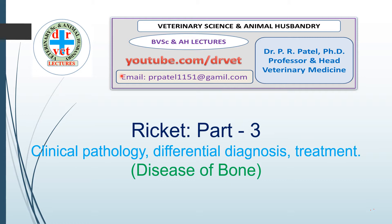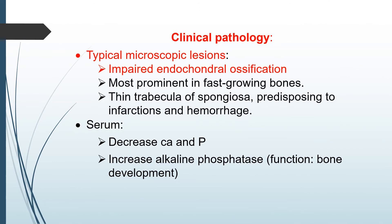Rickets disease affects the young, especially the long bones. In Clinical Pathology, there are typical microscopic lesions, including impaired endochondral ossification. The ossification of the cartilages is very poor and is most prominent in fast-growing bones. The trabeculae of the spongiosa are very thin, and the bones are predisposed to infarction and hemorrhage, which are also present as microscopic lesions.